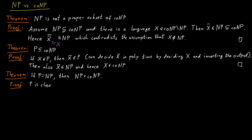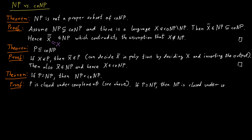Again, this is fairly easy, because P is a symmetric complexity class, so it's closed under complement. And therefore, if P is equal to NP, then NP is closed under complement as well, which means NP is equal to co-NP. So if P is equal to NP, then NP is equal to co-NP.